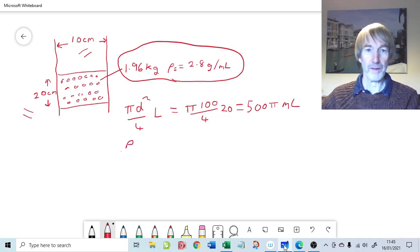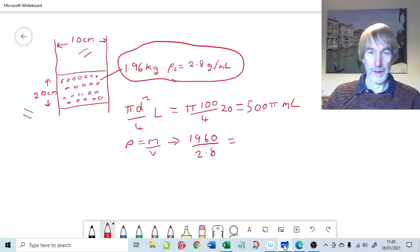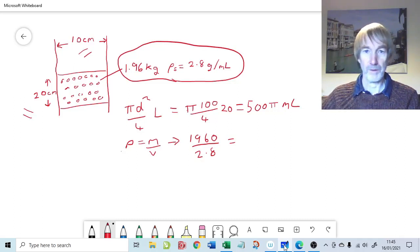Density is mass over volume. You can get that from the units, kilograms per meter cubed. So the mass we have is 1960 grams. And we need to divide by the density, 2.8 grams per centimeter cubed or grams per mil. So that gives us a volume of 1960 divided by 2.8 equals 700. So that's 700 mils of solids.